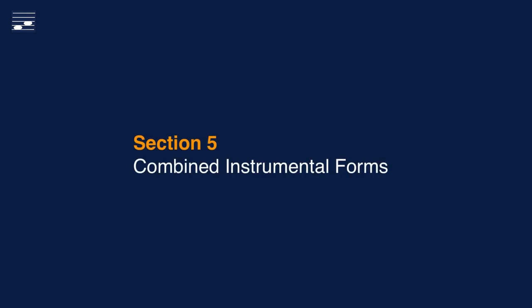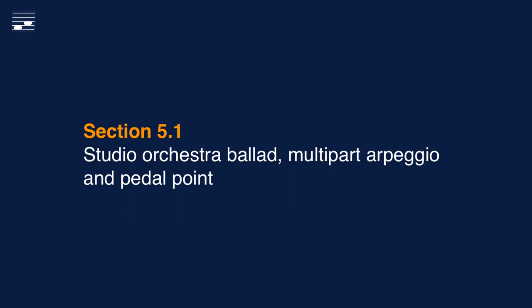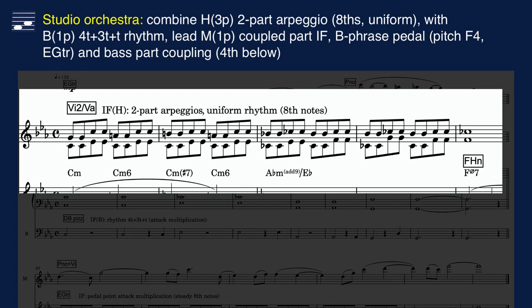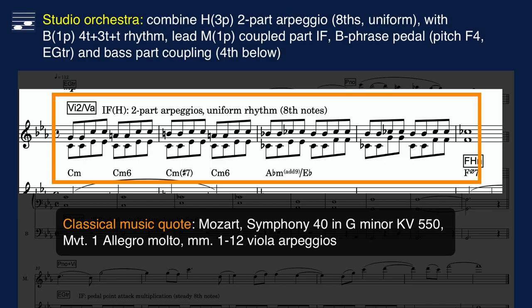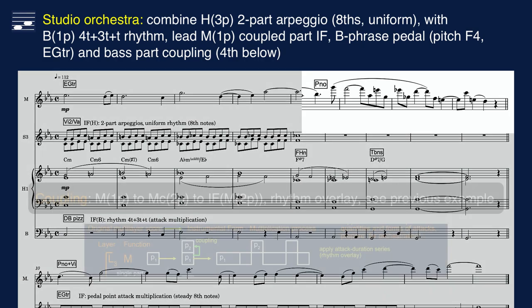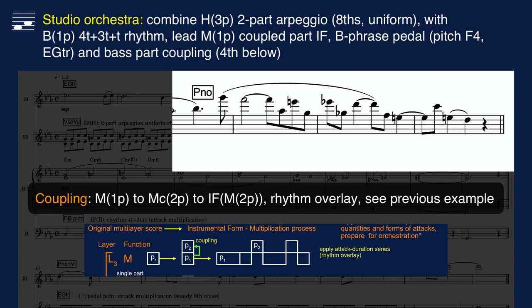The final technique in the overview diagram — harmony layer doubling — will be demonstrated in the set of combined instrumental form examples. The score once again shows the original layers, to which new staves with instrumental forms have been added. Strings play constant eighth-note, two-part arpeggio patterns, quoting the opening movement from the Mozart symphony in G minor. An upright jazz bass plays a 4 plus 3 plus 1 quarter-note duration pattern. Note that the time unit in this part is different from the strings. The lead melody exact parallel coupling and instrumental form is copied from the previous example.